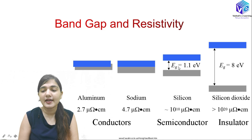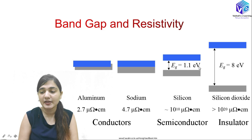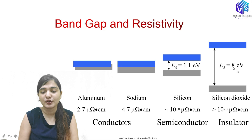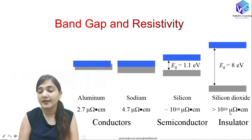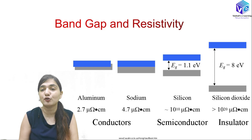For conductors like aluminium and sodium, the valence band and conduction band overlap — there is no energy gap. Silicon has an energy gap of 1.1 eV, while silicon dioxide has a very high energy gap of around 8 eV, making it an insulator. In terms of resistivity: conductors have around 2.7–4.7 micro-ohm-cm, semiconductors around 10^10, and insulators greater than 10^20 micro-ohm-cm.